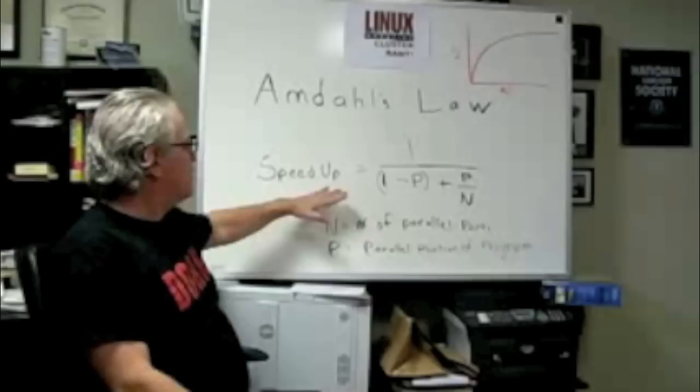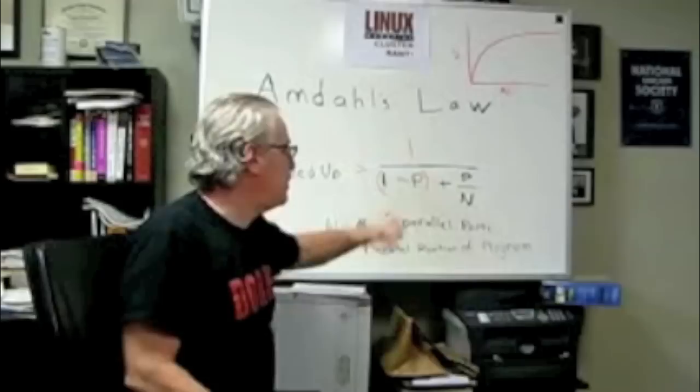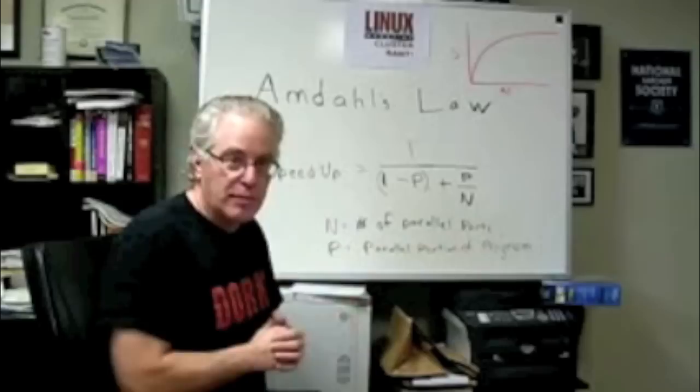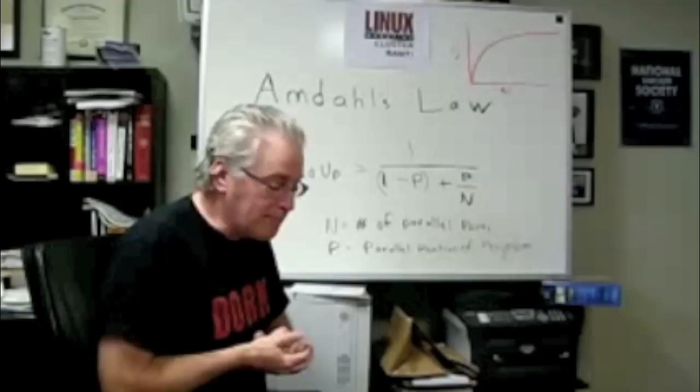Now, we have this equation that reads like this. The speed up you can expect equals one over one minus p plus p over n. Where n is the number of parallel parts and p is the parallel portion of the program. The percentage of the program.